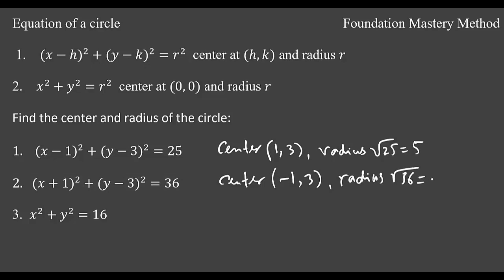So you can say square root of 36 that is 6. When you go to the third example, you have x² + y² = 16. So the center will be at (0, 0) and the radius r will be 4.